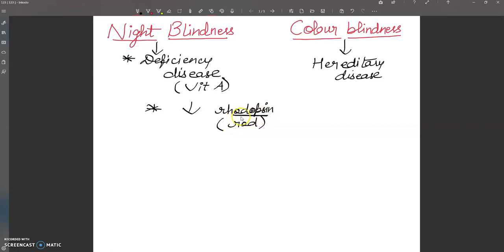Since rods cannot function without rhodopsin, the person cannot see well in dim light or at night. When the content of rhodopsin is low, the person cannot be able to see well in dim light or at night.